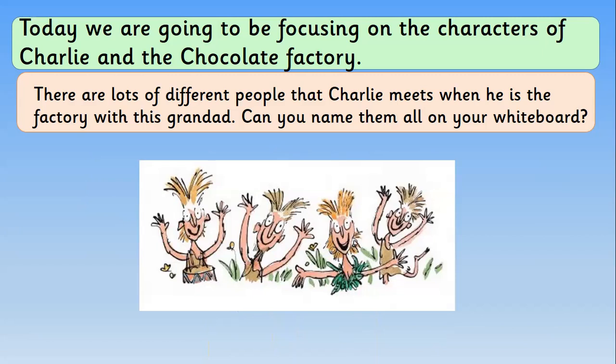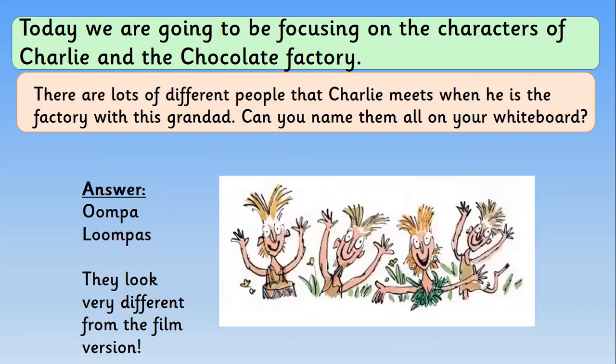These characters look completely different from the film version — this is how Quentin Blake imagined them. They look very happy and a little bit silly with that spiky up hair. They are the Oompa Loompas — well done! They do look very different from the film version. In the film I think they're orange, but actually Quentin Blake didn't imagine them orange; he imagined them like little miniature dolls.